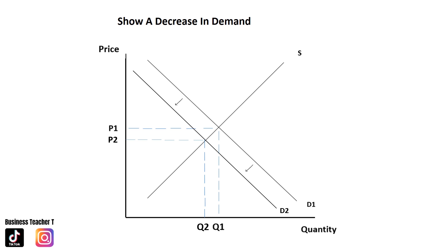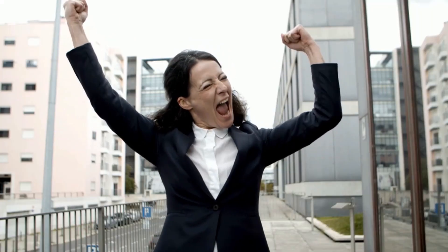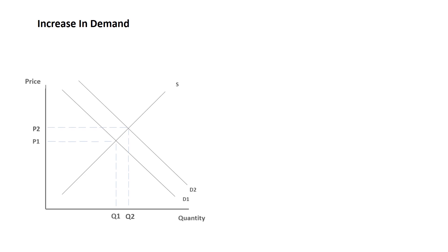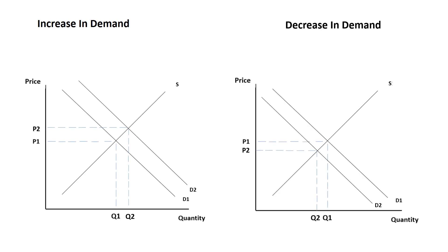Always fully label your diagrams. So to summarize: an increase in demand is a fully labeled diagram with the curve shifted right, and a decrease in demand is a fully labeled diagram with the curve shifted left.